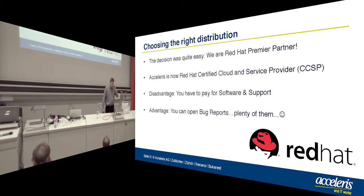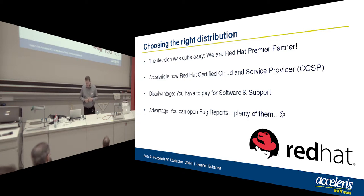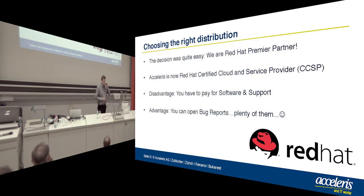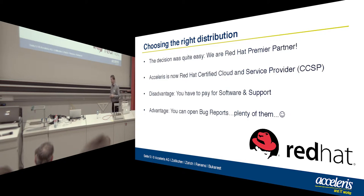One question we had to answer was which distribution to use. It was clear that we would use OpenStack, but do we use the upstream or another implementation? Since Acceleris is Red Hat's premier partner, the choice was quite easy — we decided to go with the Red Hat OpenStack Enterprise platform. We also agreed to do the Certified Cloud and Service Provider program, which means we can provide official Red Hat services on our cloud. You can bring your Red Hat licenses to run on our cloud and get official support from Red Hat as if you were using it on-premise. Disadvantages? Yes, you have to pay. But as soon as you see some bugs and can open bug reports, you will pay with a smile because you really get help from Red Hat.